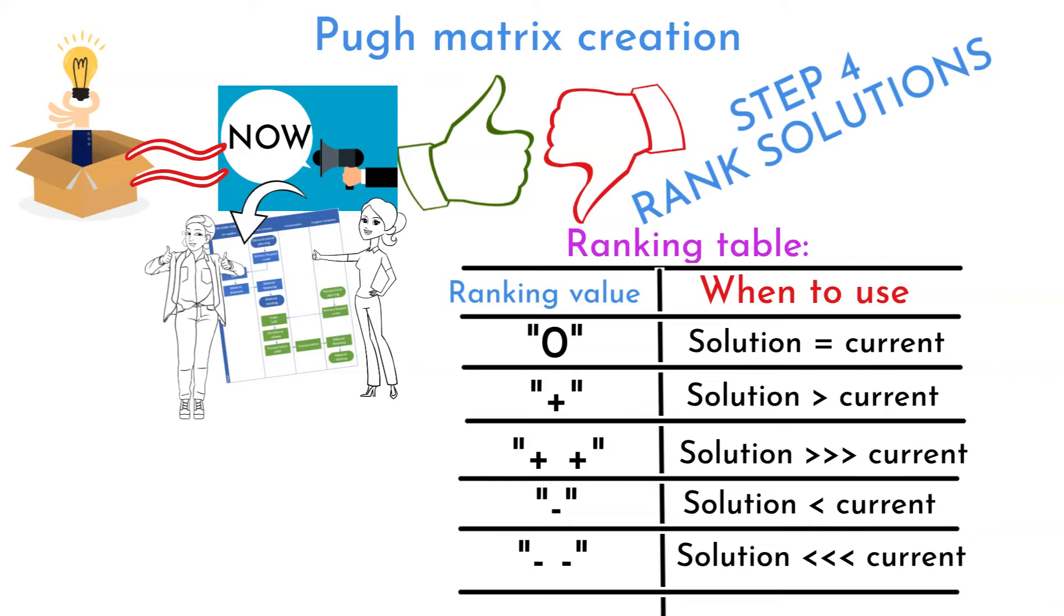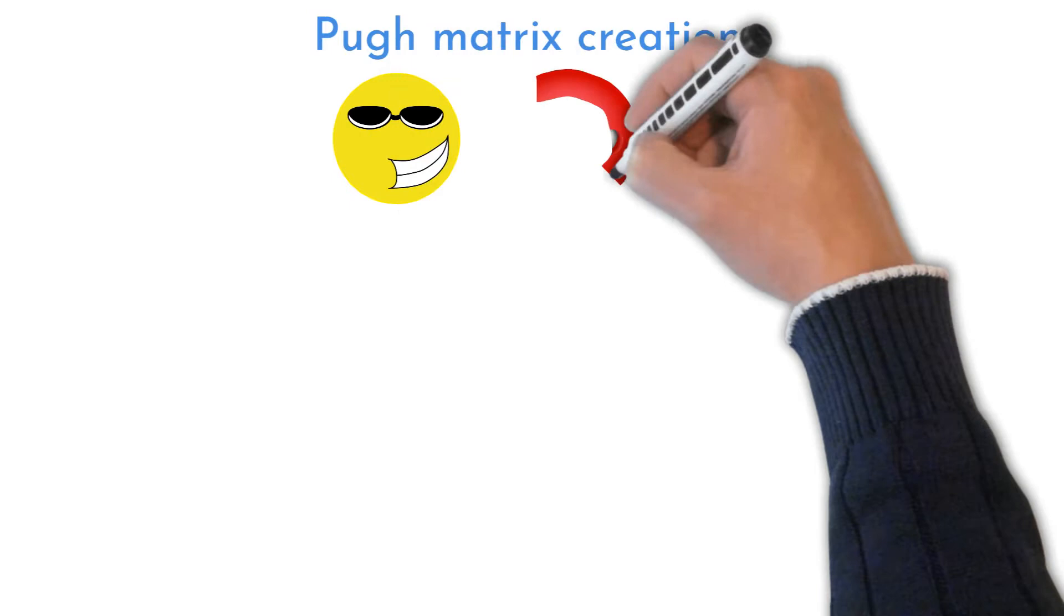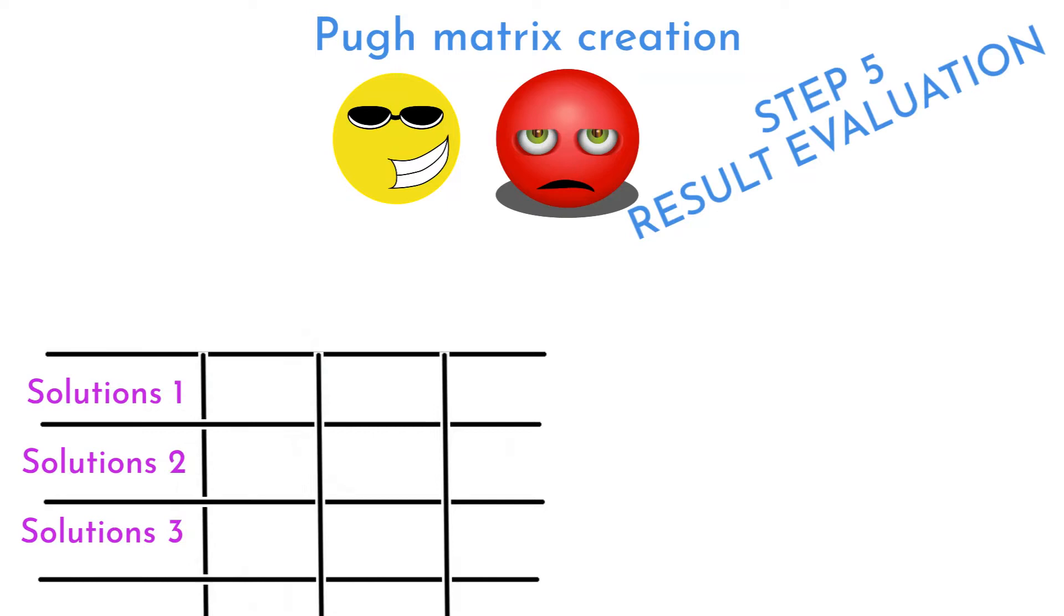Criteria evaluation is a process where ranked criteria for each solution are summed in one number. Final number height will tell us which is the preferred solution comparing with current state. Higher number means better solution.